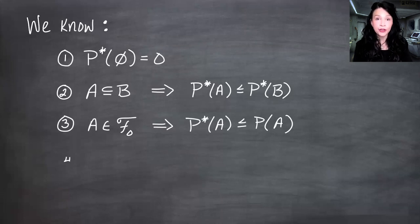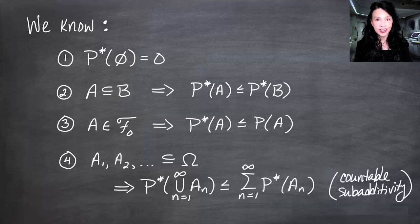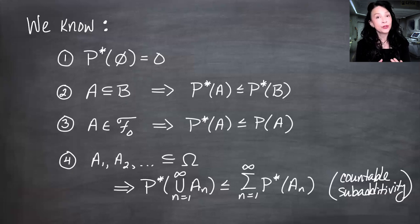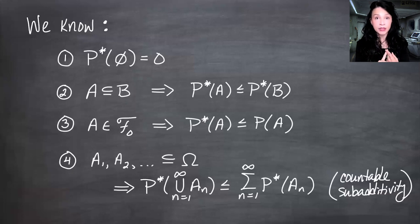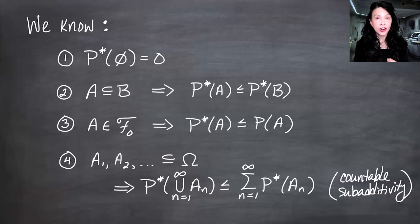The fourth thing we showed in the last video is countable sub-additivity. For any sets A1, A2, etc., subsets of omega — for countable additivity you need disjoint sets, but for countable sub-additivity you do not — P-star of the union of these sets is less than or equal to the sum of the P-star measures of the individual sets. This is not going to help us prove we have a measure. We still need to show countable additivity, which is the same statement but with disjoint sets and equality, and P-star of omega equal to one.